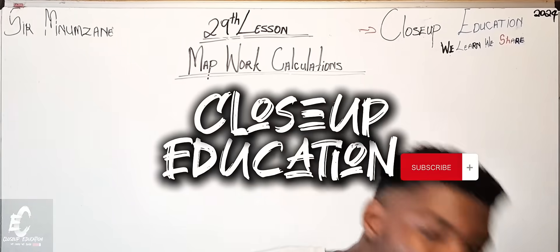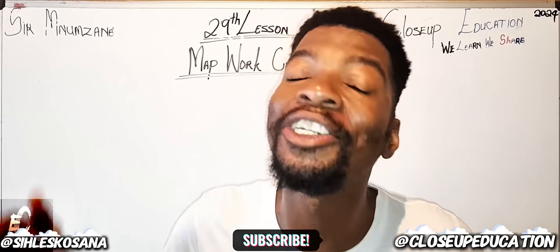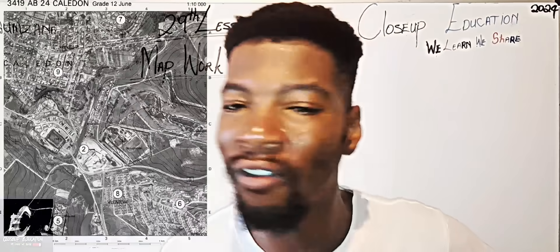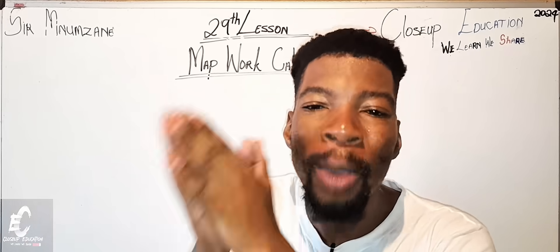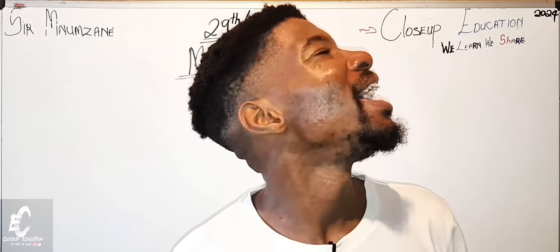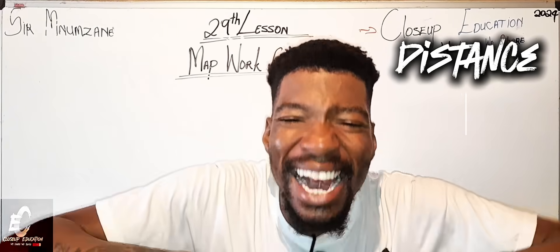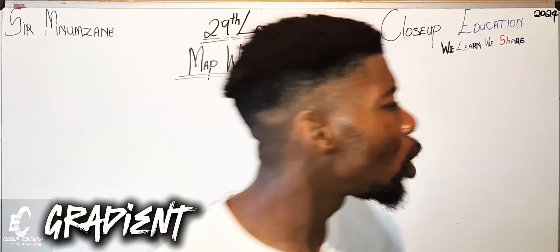According to my understanding, Njabulo made sure that everyone in this class left yesterday with a map, whether you were carrying an orthophoto or a topographic map. As you were at home going through that map, you definitely saw that there are a lot of numbers. Those numbers are not just to decorate the map — they are there to help us calculate distance or understand the gradient of that particular area.